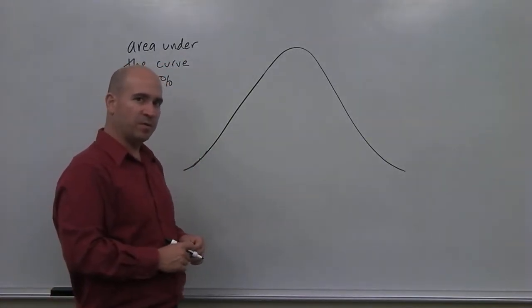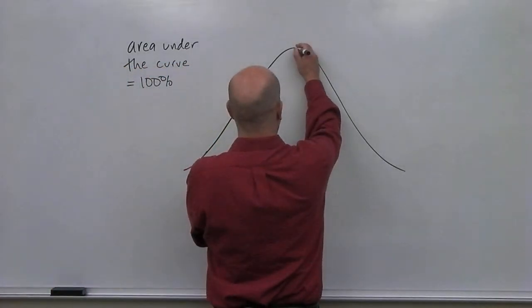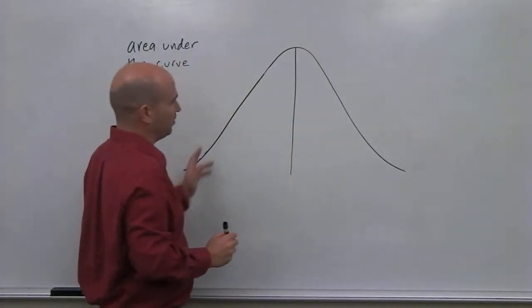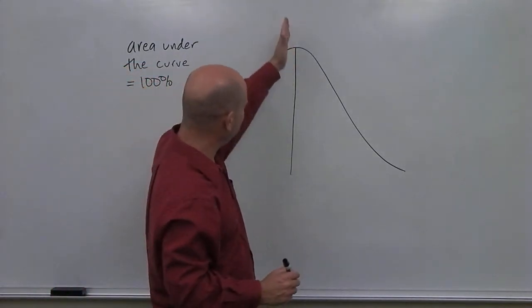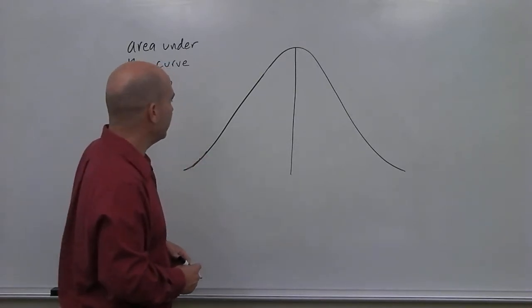Now, if you remember some of the properties of the normal curve, we could draw a line down the middle here. And this is just an approximation. My drawing isn't perfectly normal. And the line's probably not perfectly in the center, but it's intended to be. So just assume that it is.